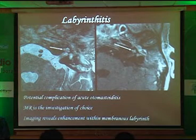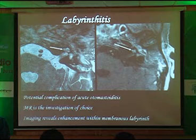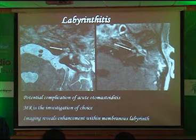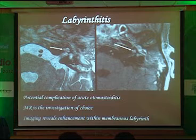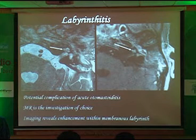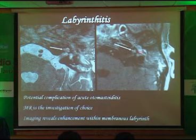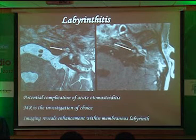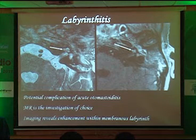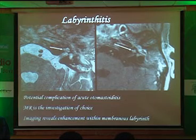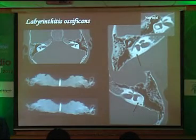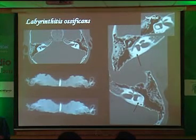Labyrinthitis: you can have enhancement on MR, which is the investigation of choice. But when it progresses to labyrinthine sclerosis, CT becomes extremely important. On MR with contrast, there should be no enhancement within the labyrinth — if you see enhancement, that means there is labyrinthitis. When ossification occurs, CT is the modality — the moment you say ossification, it is CT, not MR.